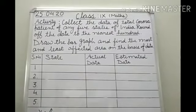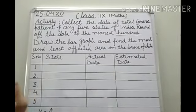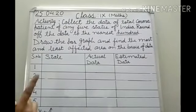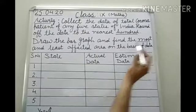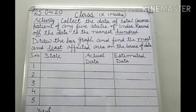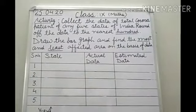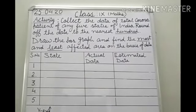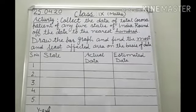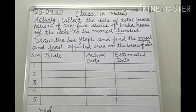Then after, you have to draw the bar graph and find the most and least affected area on the basis of the data you got. And now, randomly let us take some states.